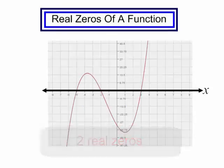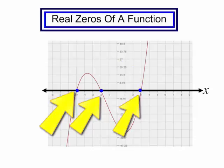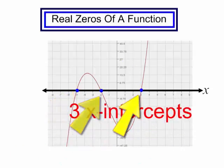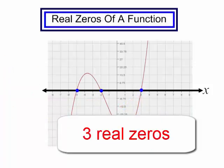How many zeros do we have in this function? It looks like it touches or crosses the x-axis three times. There are three x-intercepts, or we could say this function has three real zeros.